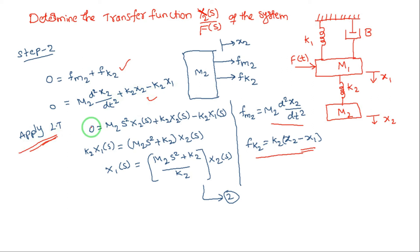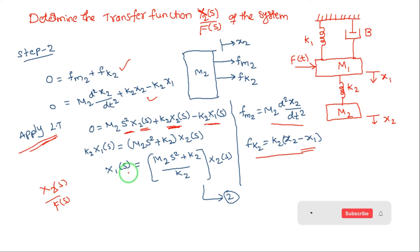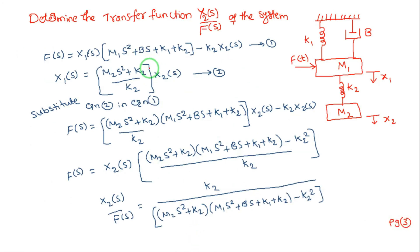Applying the Laplace transformation: 0 = m2*s²*X2(s) + k2*X2(s) - k2*X1(s). Solving for X1(s) in terms of X2(s) gives an expression that is Equation 2. This will be substituted into Equation 1 to find the transfer function X2(s)/F(s).